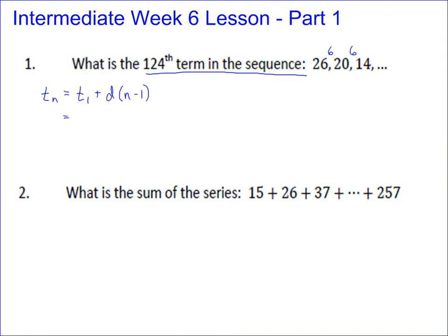Well, in this case, t_1 is 26, so you've got 26. And the difference, well, you're going down 6, so you actually have to include this as negative 6. And then times n minus 1 equals t_n. So that's our generalized formula for this sequence.